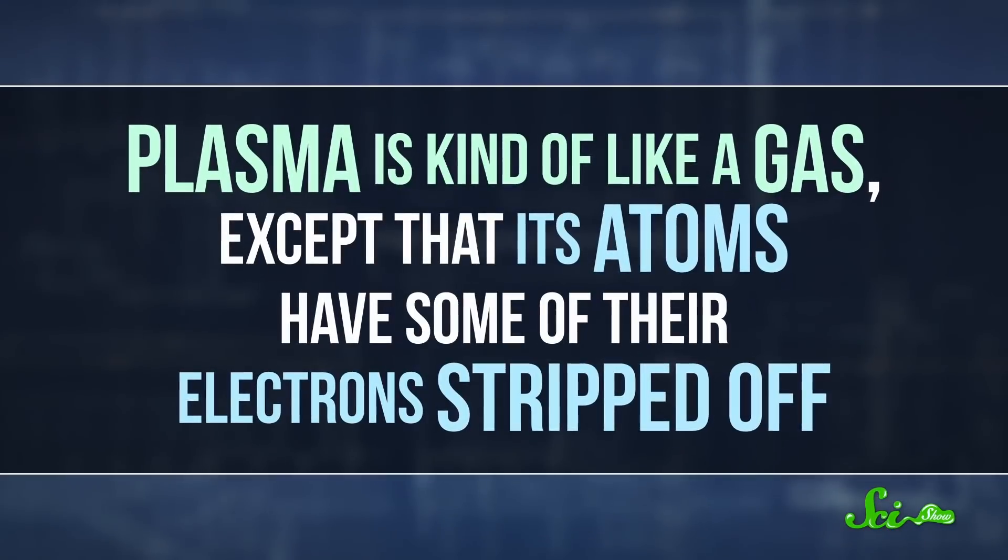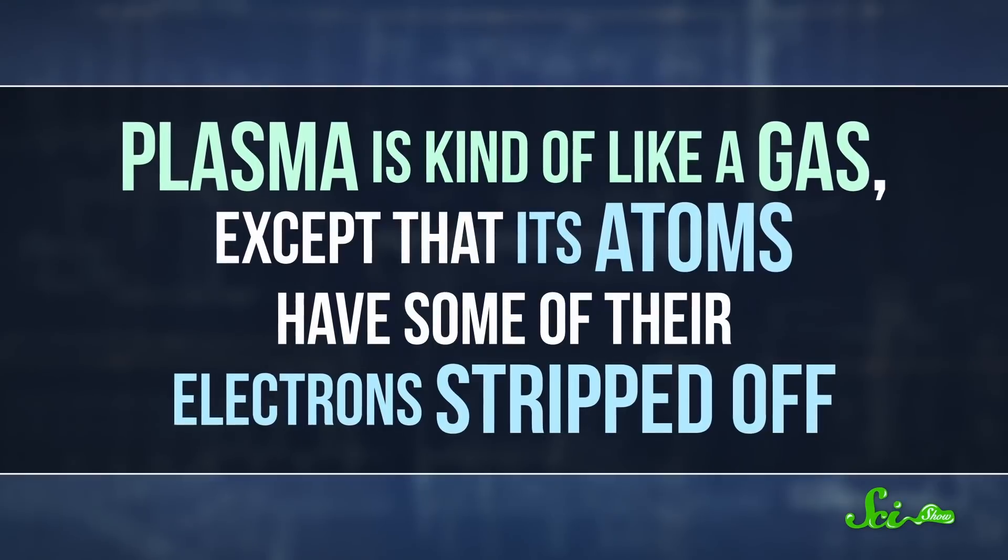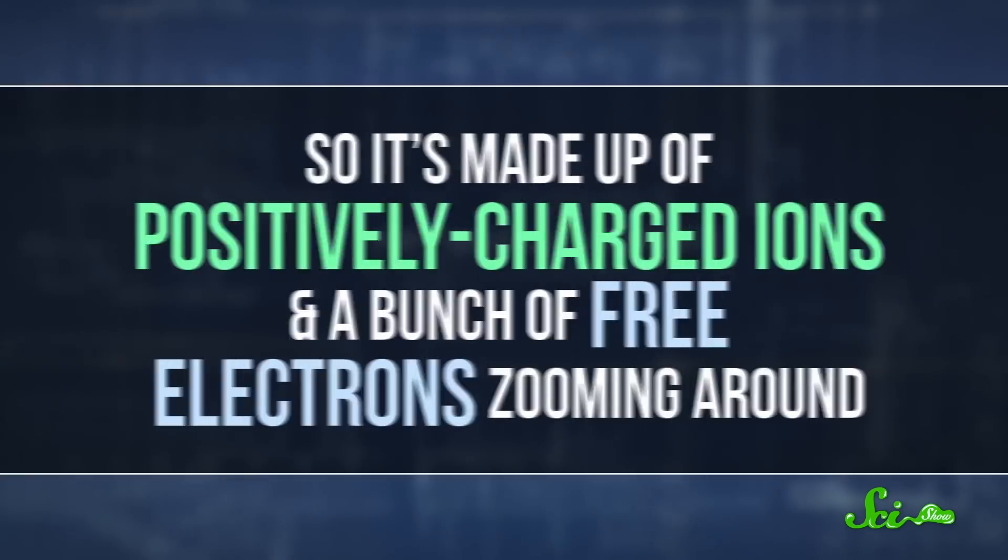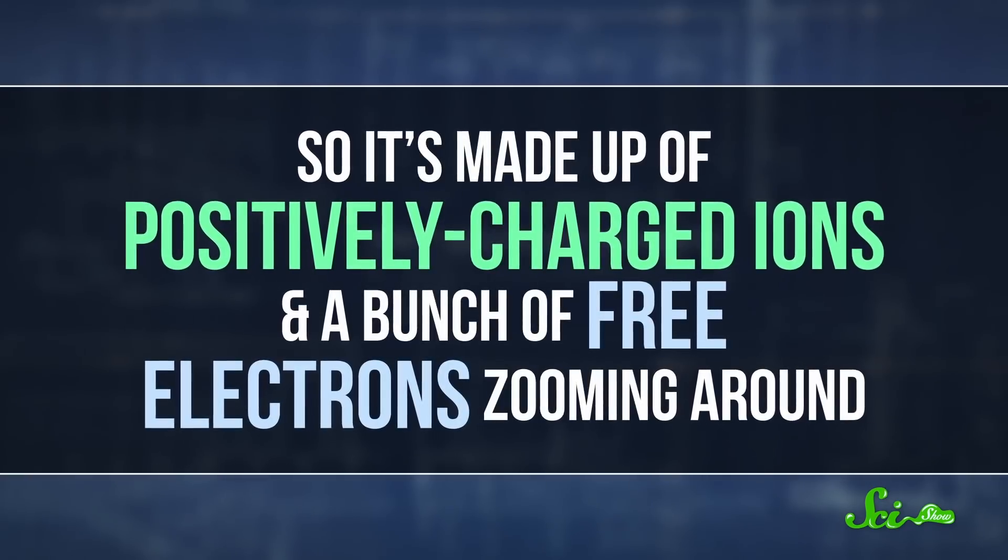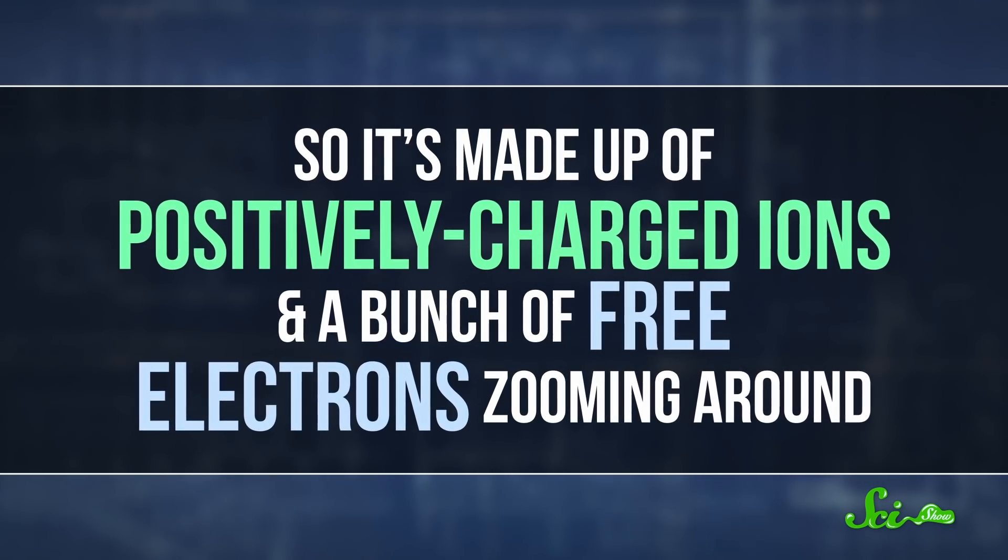Thanks to some cool physics, you don't even need fancy technology. All you need is a microwave that you're willing to destroy, and a grape. Plasma is kind of like a gas, except that its atoms have some of their electrons stripped off, so it's made up of positively charged ions and a bunch of free electrons zooming around.